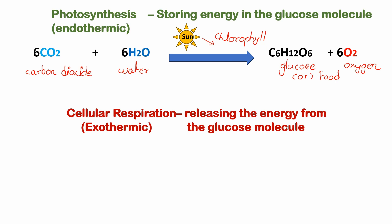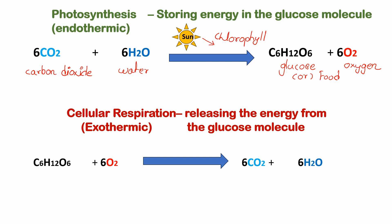The exothermic reaction is for the release of energy — releasing the energy from the glucose molecule. The process is represented by a balanced equation: C6H12O6 glucose molecule plus oxygen is used in the reaction.